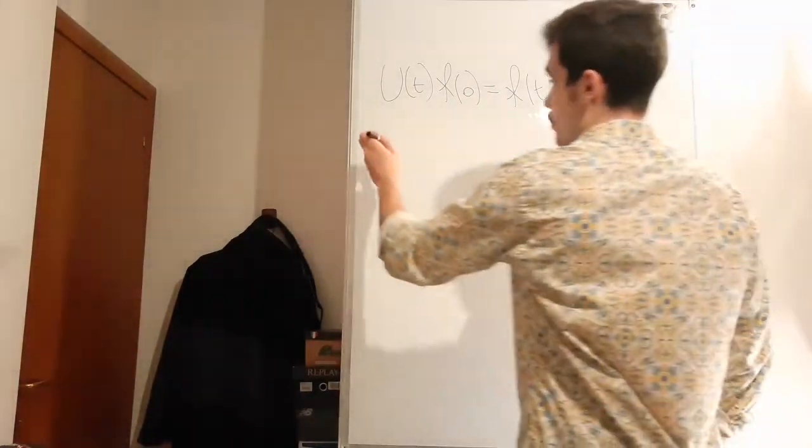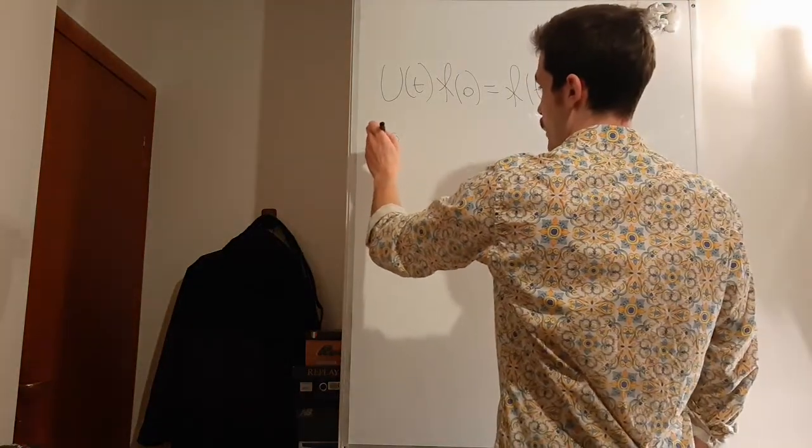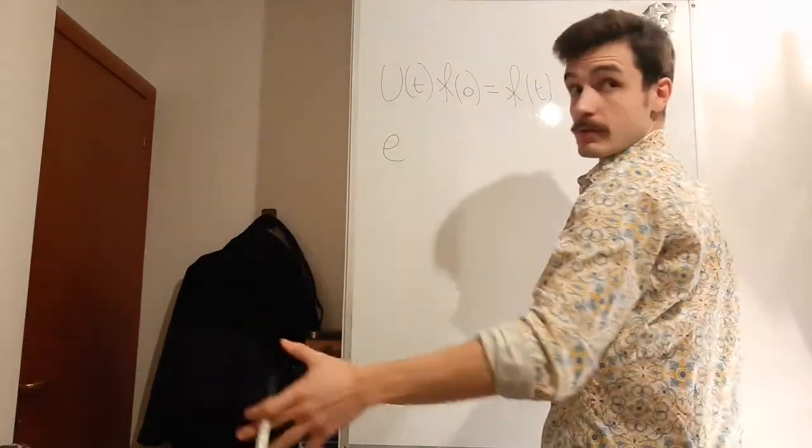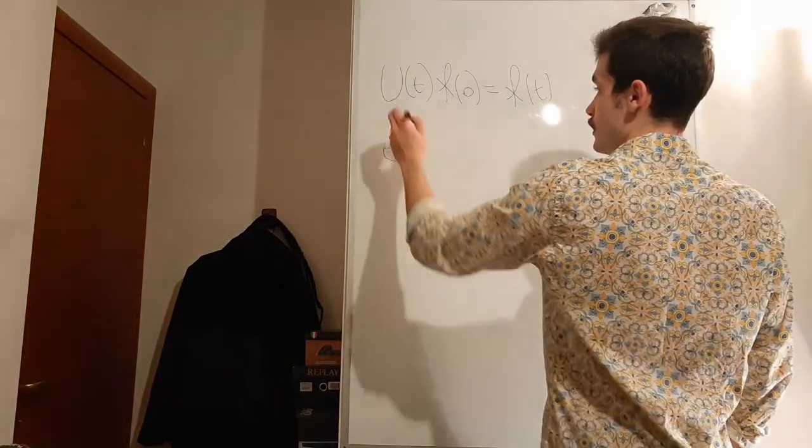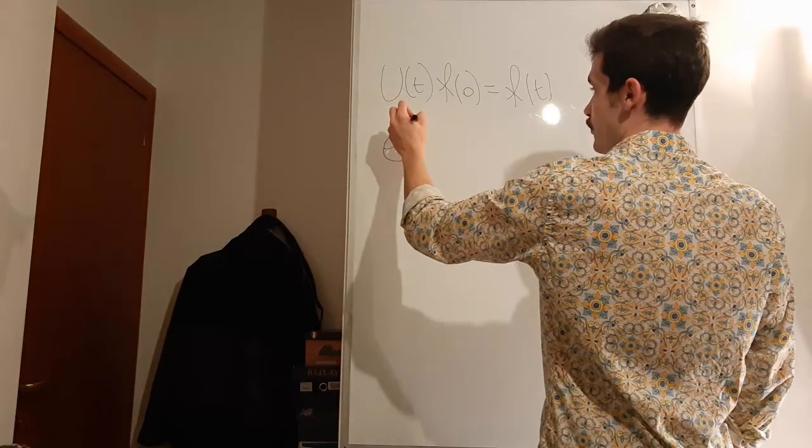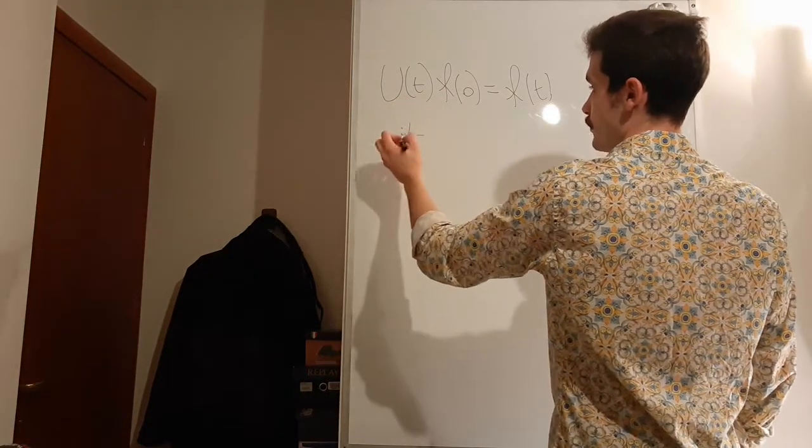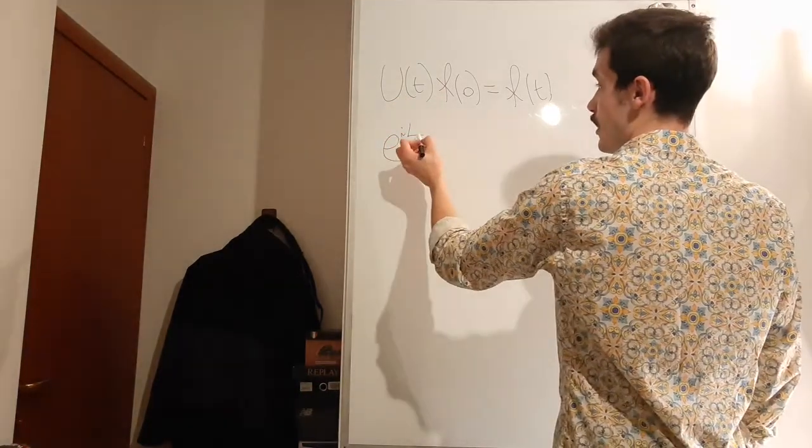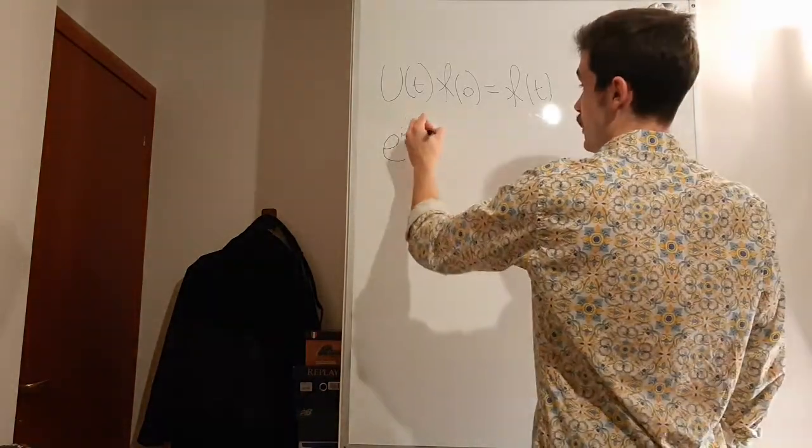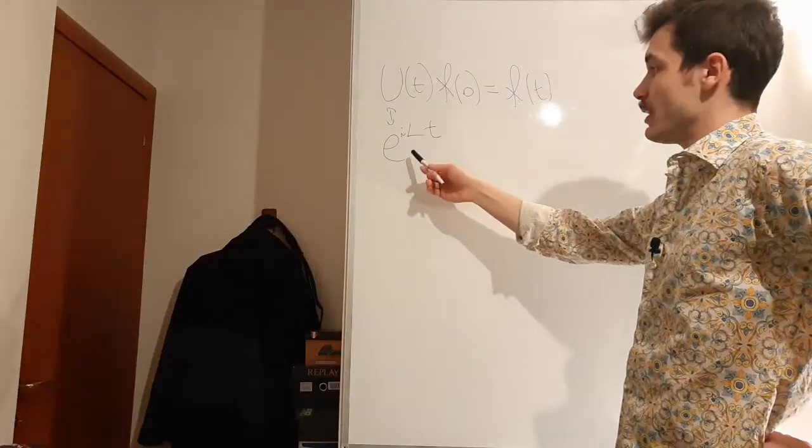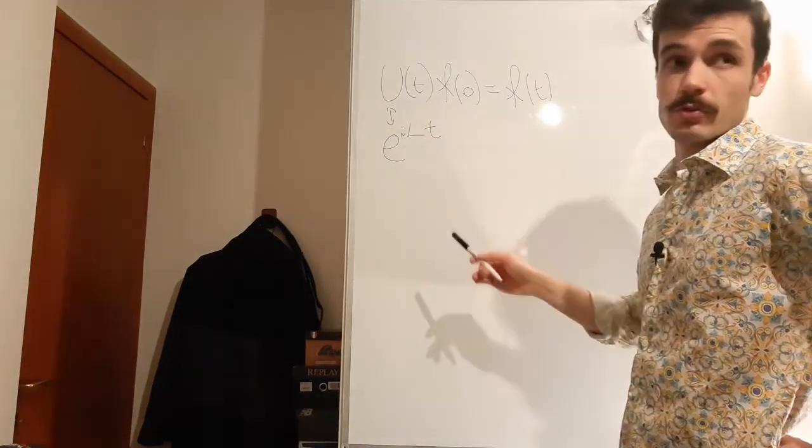We can write a propagator in a system that is Hamiltonian as the exponential of i, the imaginary unit, an operator called Liouville operator, and t. This is a propagator for systems that respect the Liouville law.